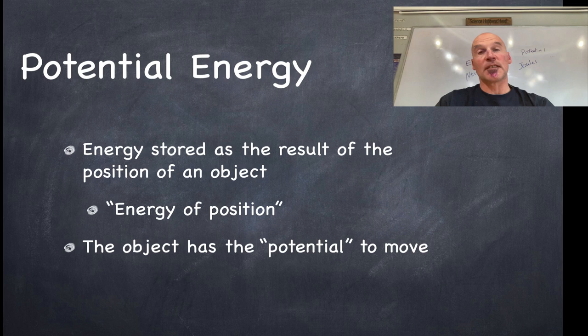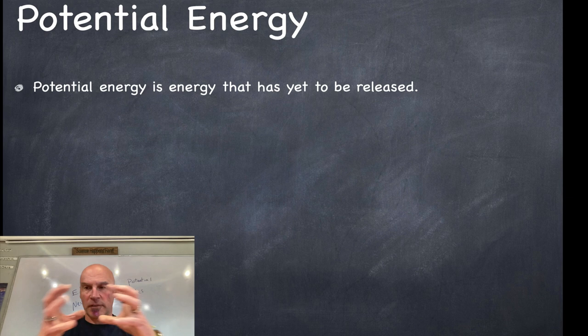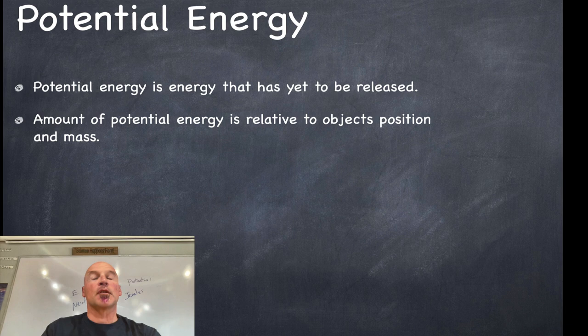So the object has the potential to move. In other words, potential energy is energy that has yet to be released. It's sort of like it has the potential to have energy, but it's still stored up. The amount of potential energy is relative to the object's position and the object's mass.